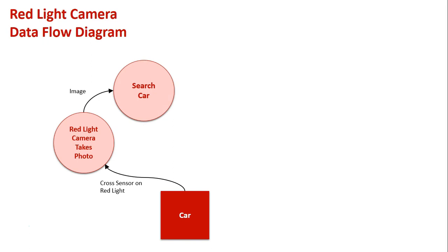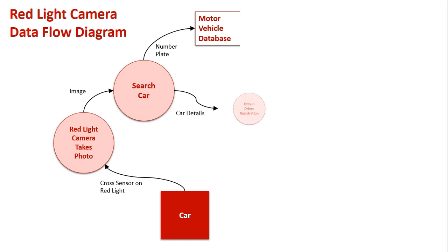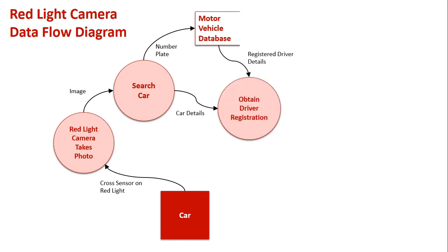From here, the image is used to search for the car based on its number plate against the motor vehicle database, which we deal with as part of our registration. Our cars are registered to specific drivers. From here, the car details and the registered driver to that car are used to obtain who the driver is. Once we know who the driver is, we can then generate the fine.